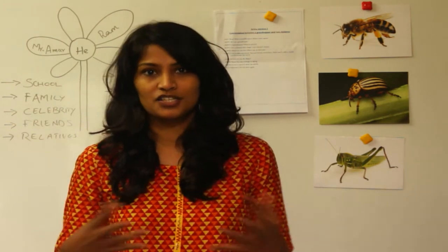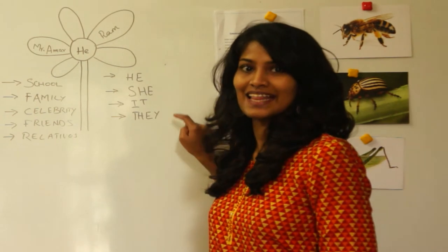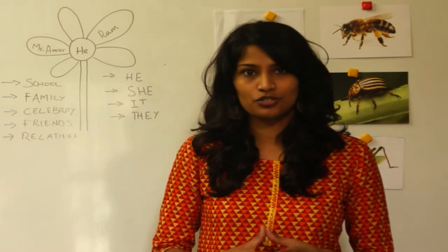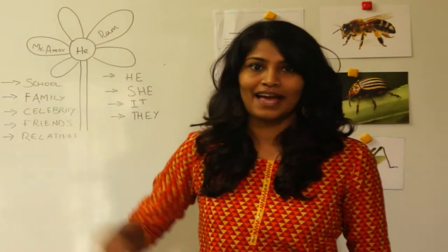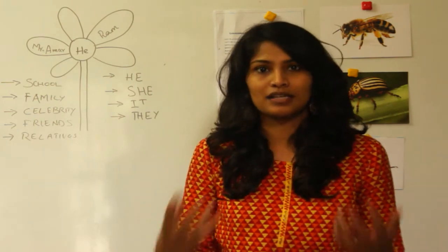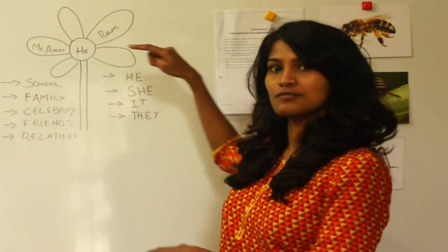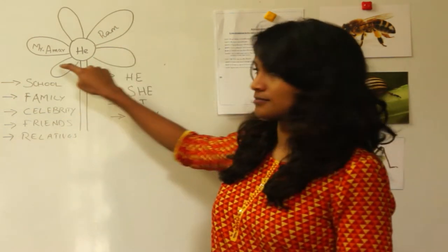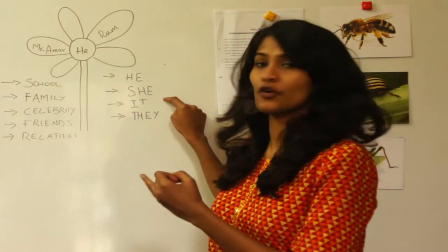The next activity is teaching them pronouns. We will be giving out colour sheets to the children and putting four pronouns on the board: he, she, it, and they. The kids are going to draw a flower and write 'he' in the centre. You explain to them that a pronoun is a replacement of a noun for a male figure, and they write down names of different people they know in each petal.